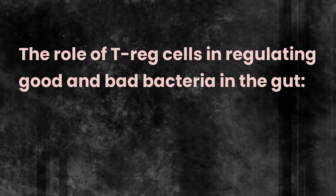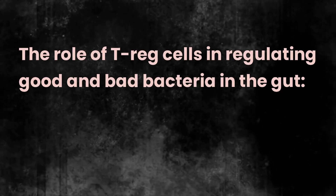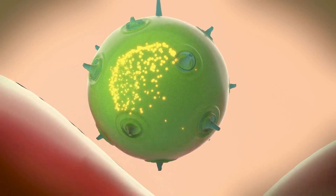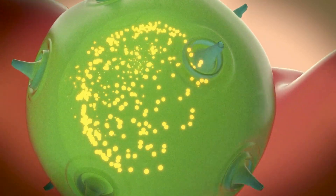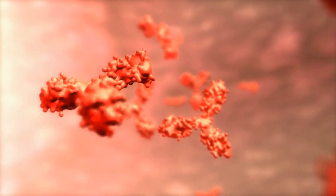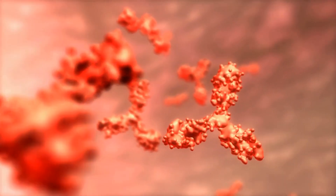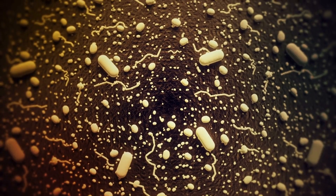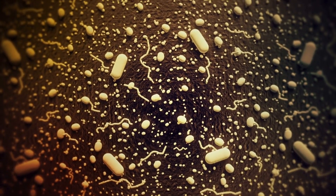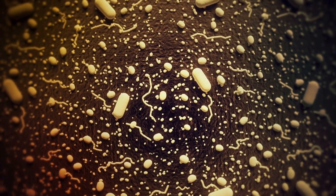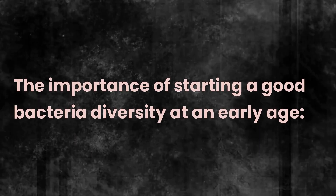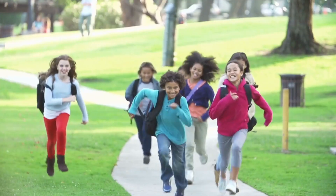One key component of the immune system is T-reg cells, which help to regulate the balance between good and bad bacteria in the gut. T-reg cells are specialized T cells that play a critical role in maintaining immune tolerance and preventing autoimmunity. If there is not a good amount of bacteria variety, there may not be enough regulation produced by T-reg cells, and the immune system may begin to destroy the good bacteria.